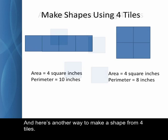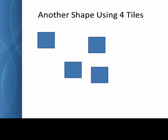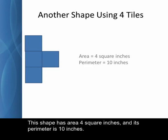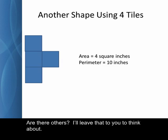And here's another way to make a shape from four tiles. This shape has area four square inches, and its perimeter is ten inches. I said I'd make all possible shapes from the four tiles, and I've shown you three shapes. Are there others? I'll leave that to you to think about.